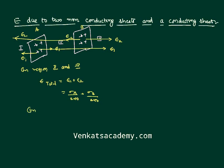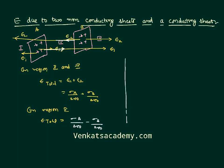In region 2, the middle region, E1 and E2 are in opposite directions. So the total field in region 2 is E_total = sigma_A by 2 epsilon naught minus sigma_B by 2 epsilon naught. This is how we find electric field intensity when there are multiple non-conducting sheets.